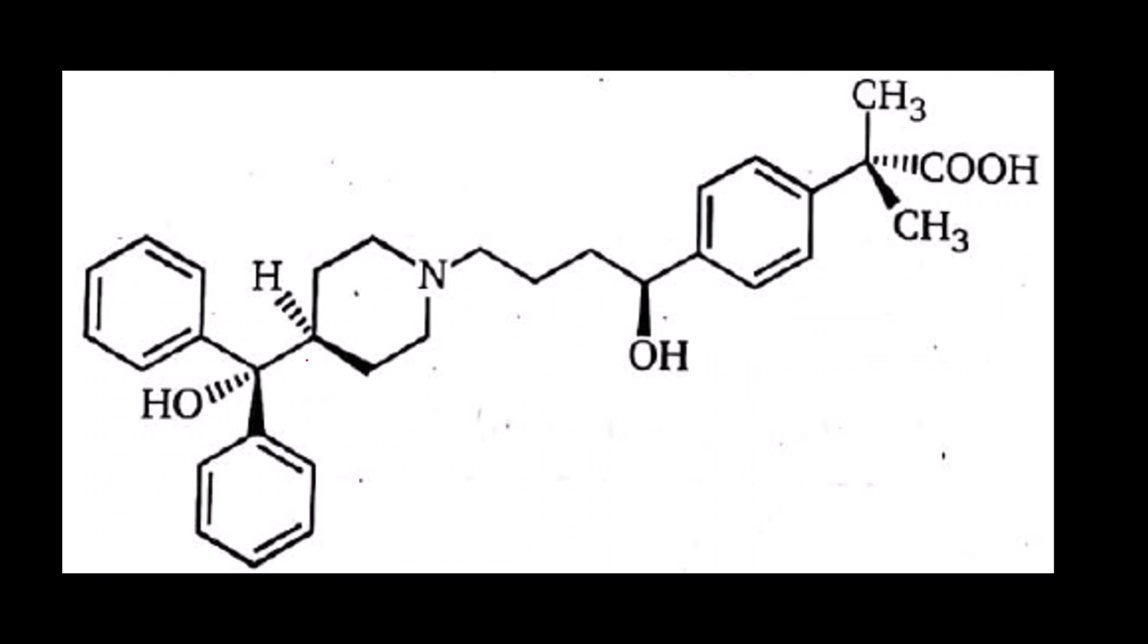From the first glance, let us first again recap what is a chiral center. It is a carbon atom attached to four different groups.